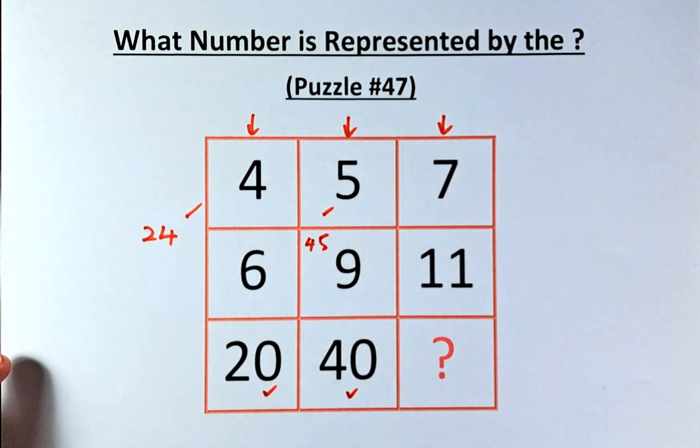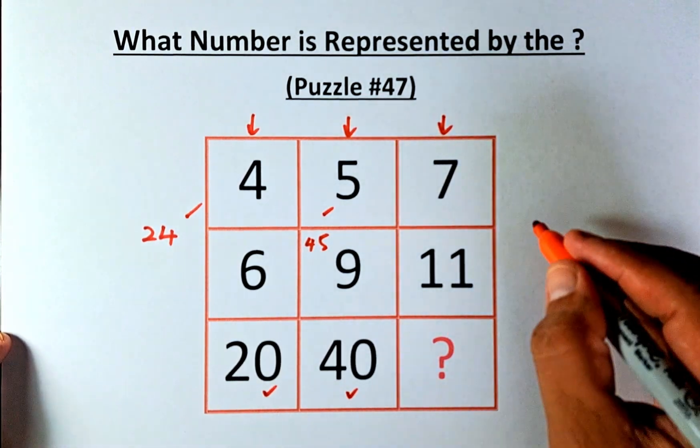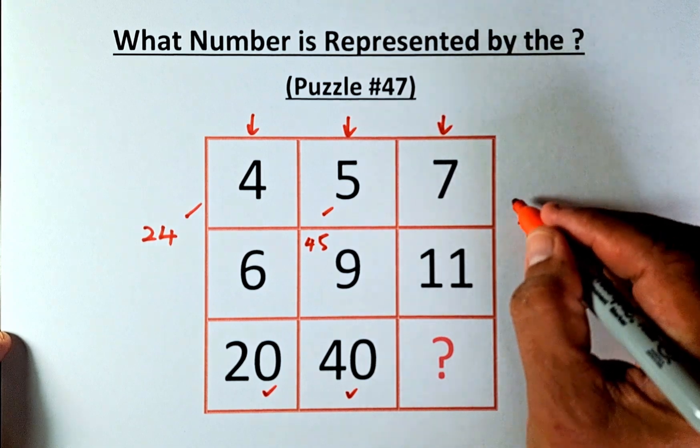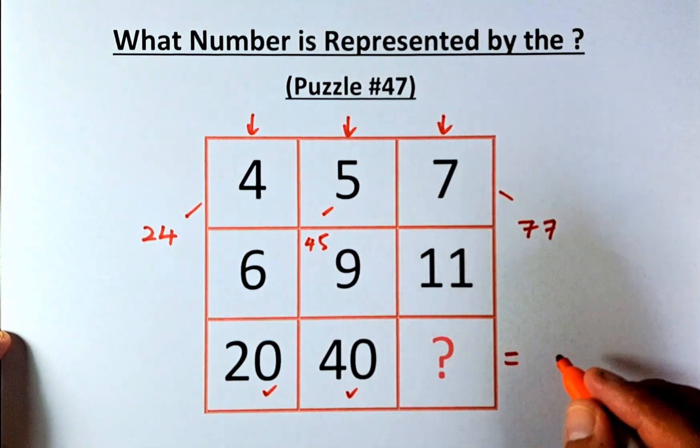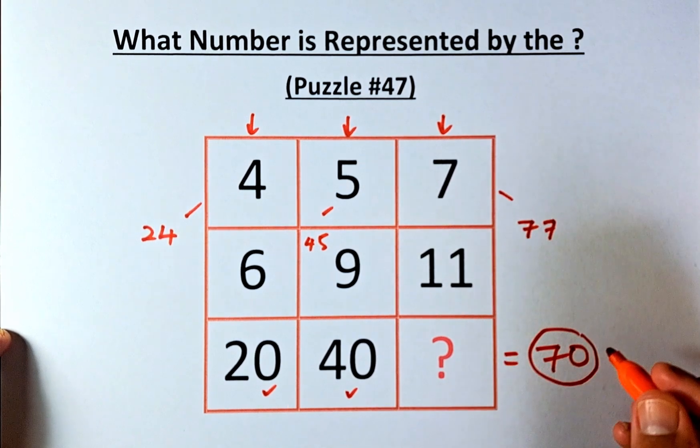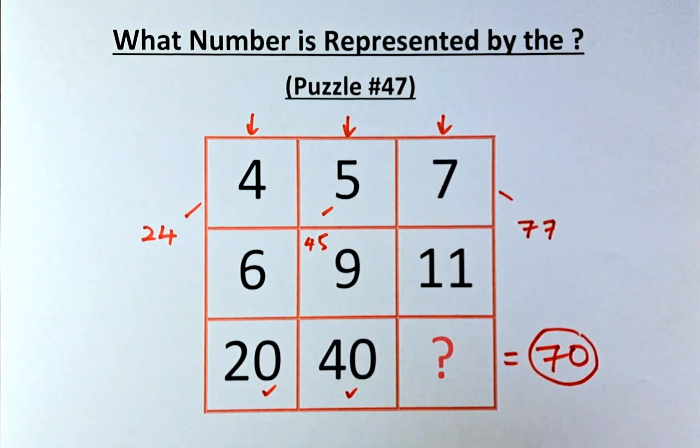So what is 7, 11, and a question mark? 7 times 11 is 77, and 77 minus 7 equals 70. The question mark equals 70. I believe most of you will get it right because you guys are geniuses, and I'll see you in the next one. Follow for more puzzles. Cheers, everyone!